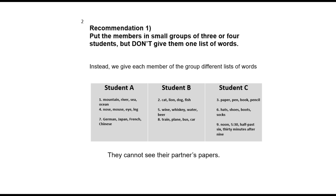Student A starts reading number one, then B has number two, and C has number three. This way it involves listening and pronunciation. For example, look at number four on student A's paper: nose, mouse, eye, leg — it's obvious that mouse is odd. But if we are just hearing student A read it, we might hear the word 'mouth' instead of 'mouse' if A doesn't pronounce it clearly.